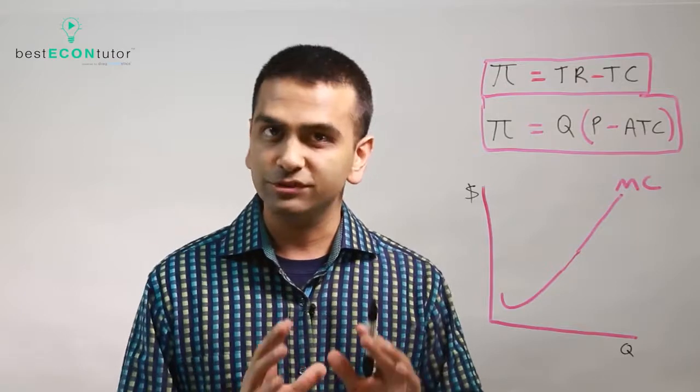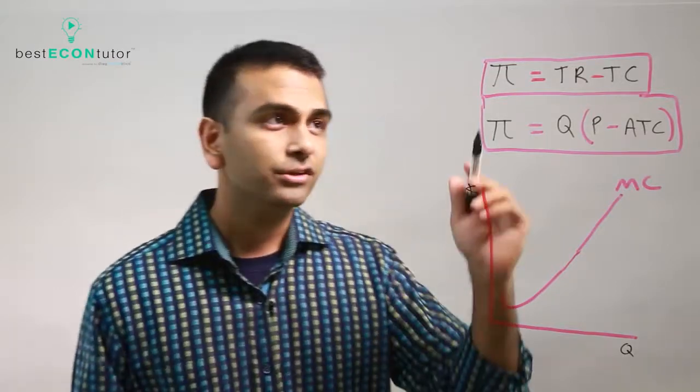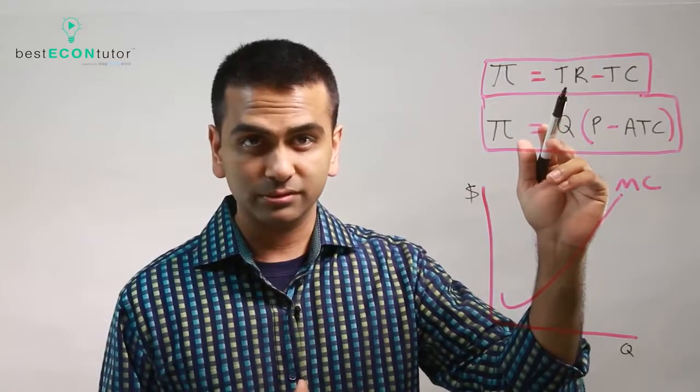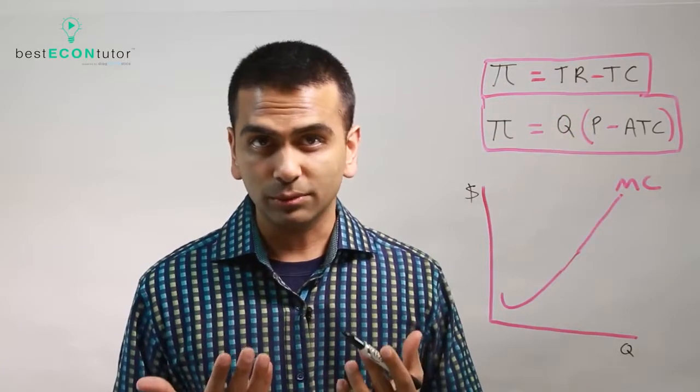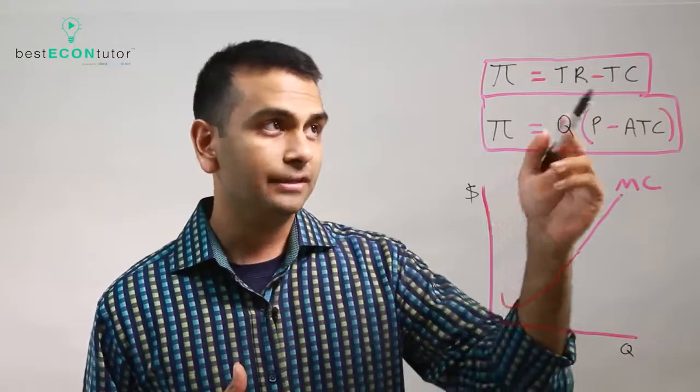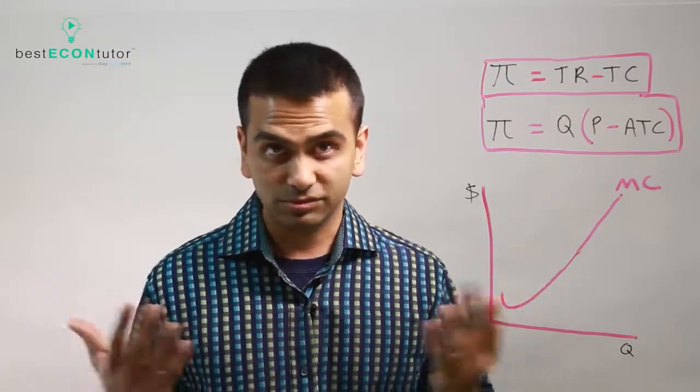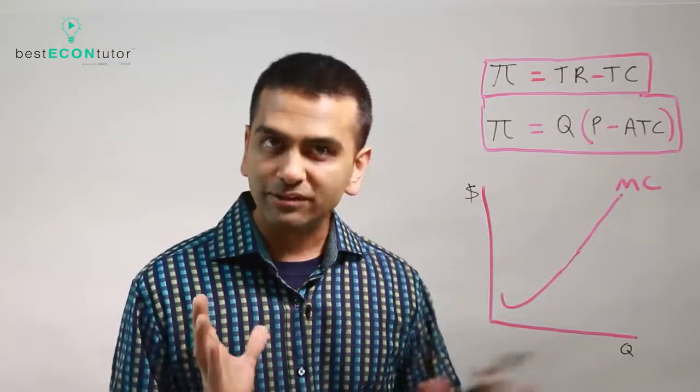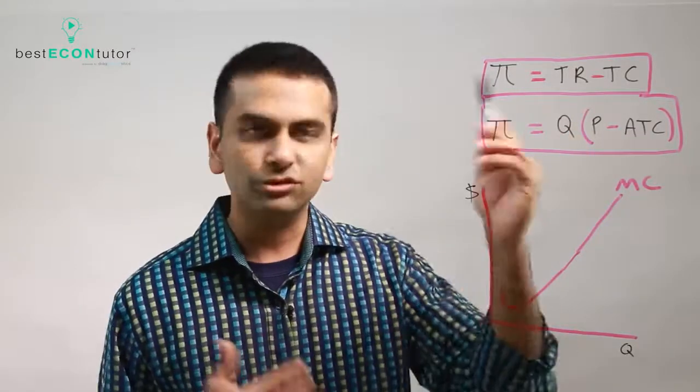If you see a P, that's price. If you see a π, that's profit. So the main equation for profit is that it's total revenues minus total cost. Total revenue is how much money you're bringing in in sales from your customers, and total cost is how much you spend to produce the goods. So revenues minus cost is what you have left over and that's your profit.